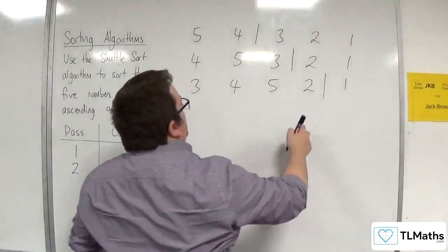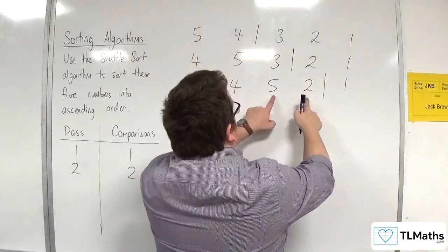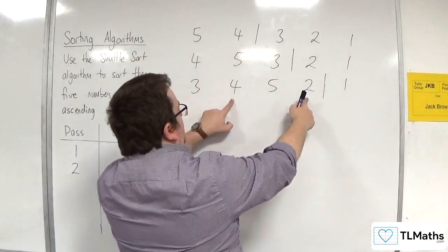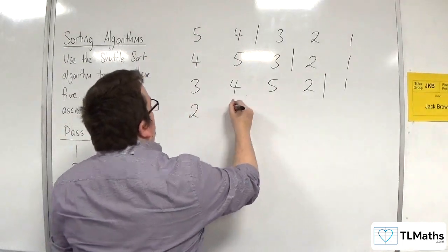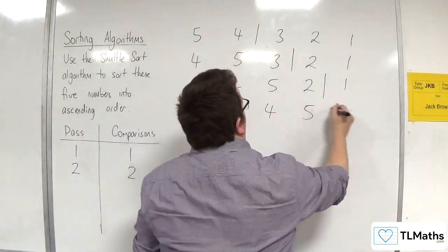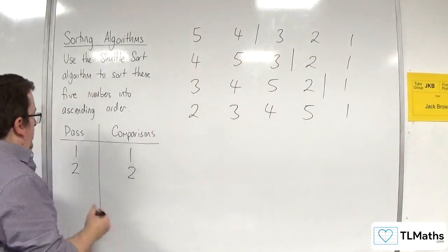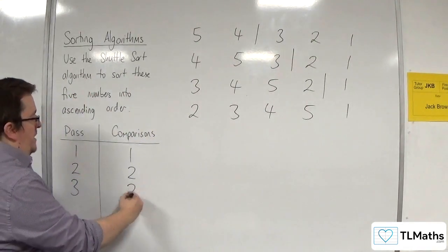Then, we bring in 2. 2 gets compared with 5, and we swap. 2 gets compared with 4, and we swap. 2 gets compared with 3, and we swap. So, we'd have 2, 3, 4, 5, 1. And so, on the third pass, we would have 3 comparisons.